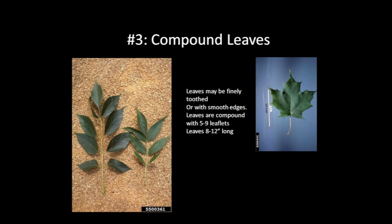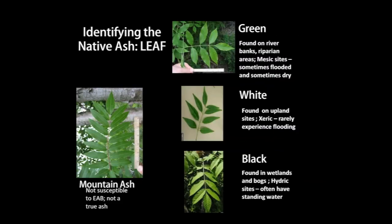Leaves of the ash are compound. A compound leaf consists of one leaf stalk with several smaller leaflets attached. The sugar maple, by contrast, is a simple leaf — one leaf, one leaf stalk, attached to the twig. Ash leaves generally have five to nine leaflets depending upon the species.